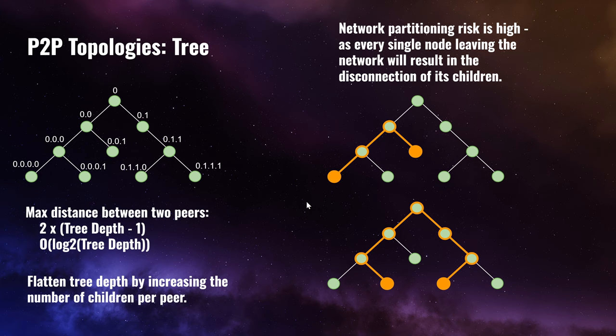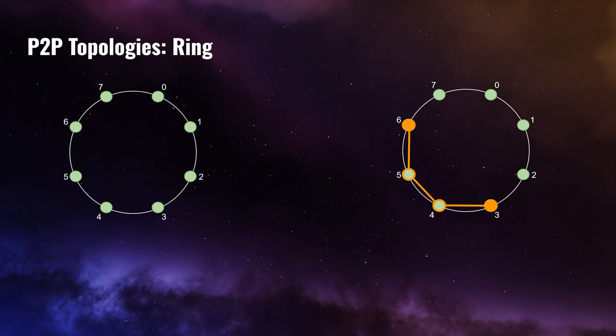It's also possible to flatten the tree depth by increasing the number of children per peer, which decreases the distance between any two peers in the network. The ring peer-to-peer topology is currently the most popular peer-to-peer topology, and it is used by networks such as Kademlia, Chord, Pastry, and Tapestry.